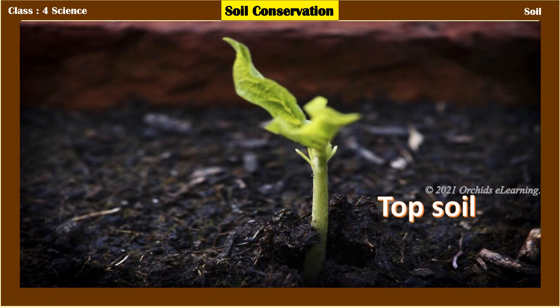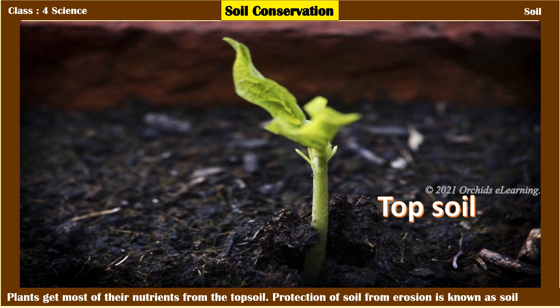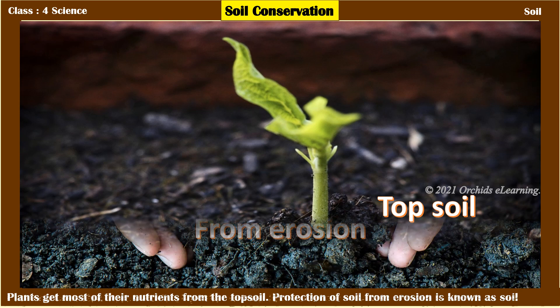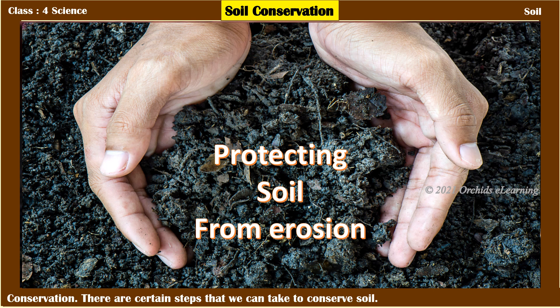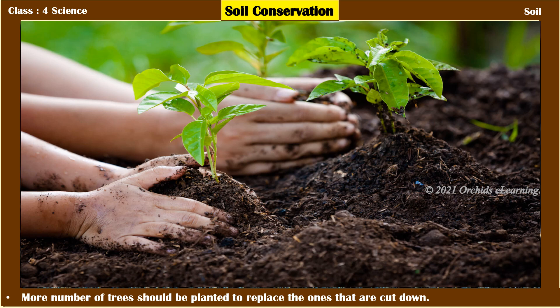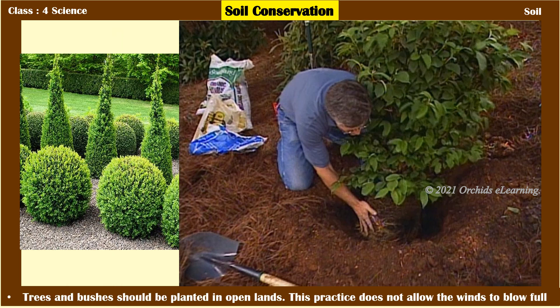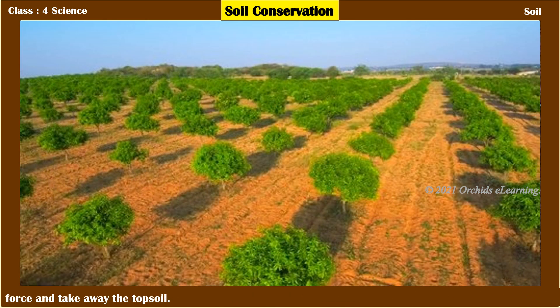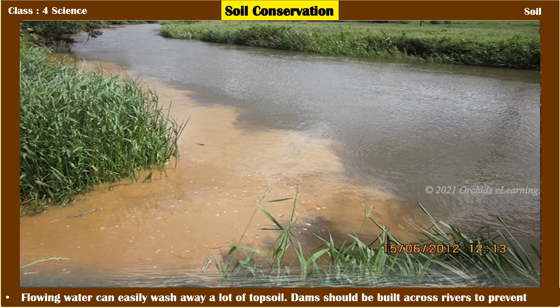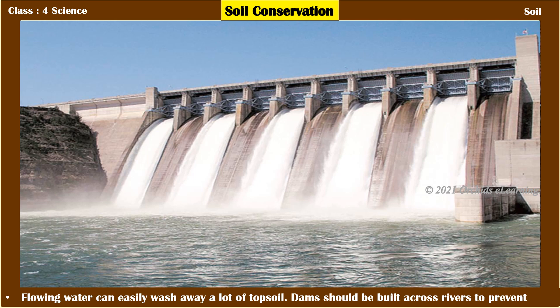Plants get most of their nutrients from the topsoil. Protection of soil from erosion is known as soil conservation. To conserve soil: more trees should be planted to replace the ones that are cut down, and trees and bushes should be planted in open lands so that winds cannot blow with full force and take away the topsoil. Dams should also be built across rivers to prevent floods from washing away topsoil.